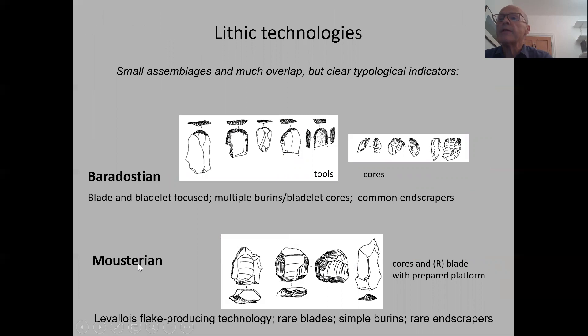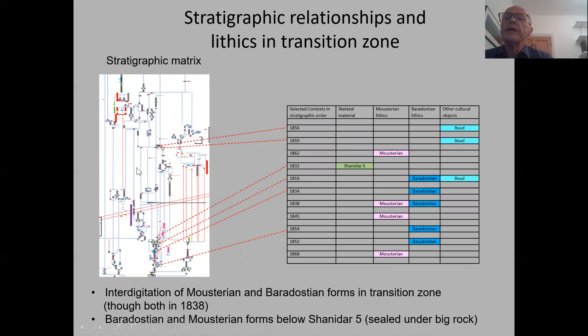The lithic technologies include classic Baradostian types and classic Mousterian types — small assemblages with a lot of overlap, but clear typological indicators. Looking across the transition zone, this is part of the stratigraphic matrix from the project. Context 1832, which contains Shanidar 5, yields both Mousterian and Baradostian tools and beads. We're finding that Mousterian and Baradostian forms in this zone are interdigitated, and there are both forms below Shanidar 5 in clearly sealed conditions under massive rocks.